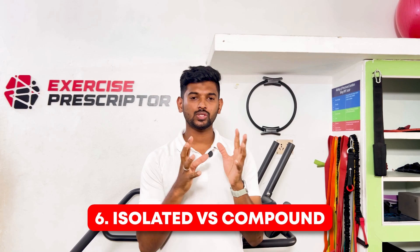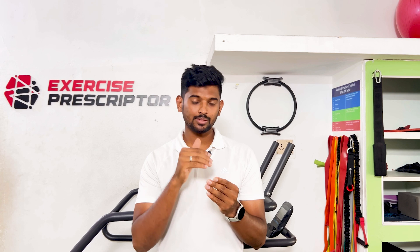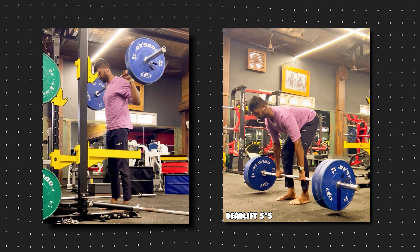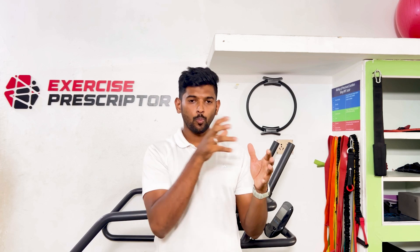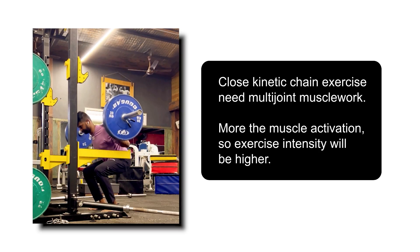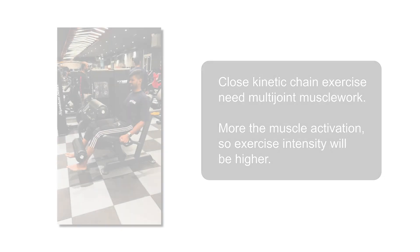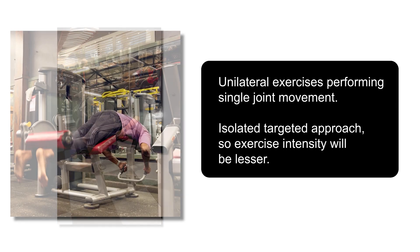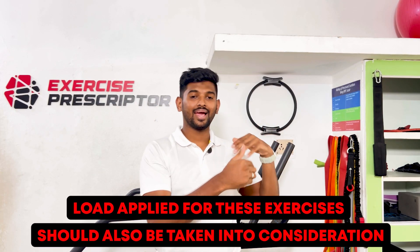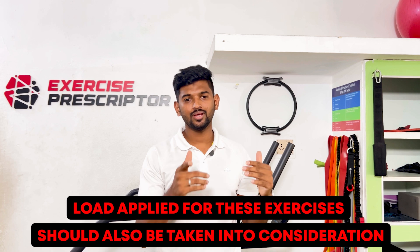The sixth factor is isolated movement versus compound movement. For example, treating knee pain by targeting the quadriceps in isolation through leg extension or leg curl, then progressing to squats, deadlifts, and hip thrusts. This is essentially single-joint to multi-joint exercise, or open kinetic chain to closed kinetic chain exercise. Closed kinetic chain exercise requires multi-joint muscle work and more muscle activation, so exercise intensity is higher. Isolated, single-joint movement has lesser exercise intensity.